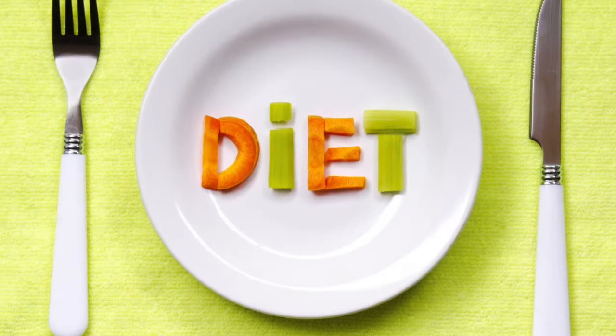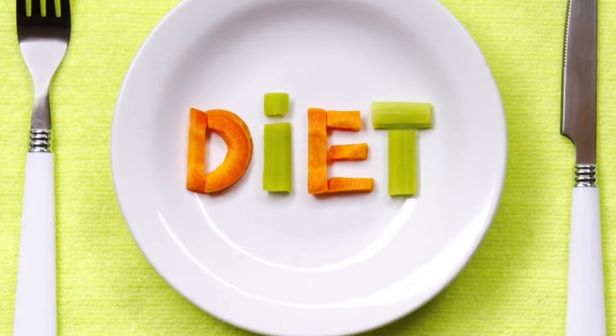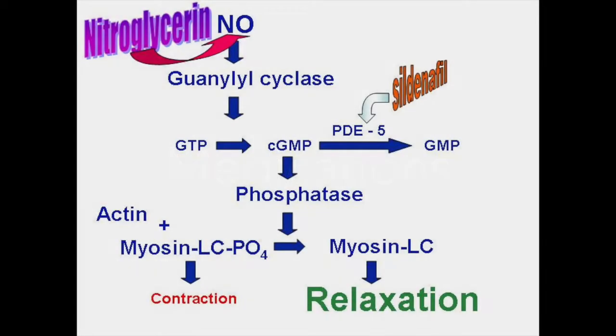Treatment options for angina include lifestyle changes, medications, and surgeries. Lifestyle changes may help with mild angina, and these include dietary changes, exercising, trying to lose weight, and stopping tobacco use. Medication can be used to treat angina if lifestyle changes do not work. One common medication for angina is nitrates, which relax and widen your blood vessels, allowing more blood to flow to your heart muscle.